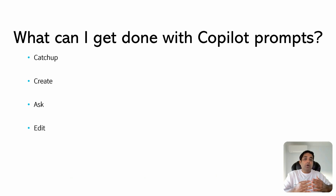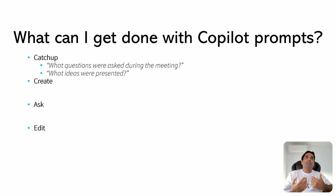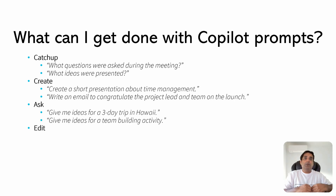With Copilot, you can create or edit content, post questions, summarize information, and stay updated on various matters. So the question is, what can I get done with Copilot prompts? Every prompt you write would most probably end up in one of these categories: catch-up, create, ask, and edit. For example, in catch-up, some questions could be 'What questions were asked during the meeting?' or 'What ideas were presented?' — especially when using Copilot in Teams. In create, it could look like 'Create a short presentation about time management' or 'Write an email to congratulate the project lead and team on the launch,' especially using Copilot with Microsoft Word or Outlook. In asking, you could say 'Give me ideas for a three-day trip to Hawaii' or 'Give me ideas for a team-building activity,' especially when using Copilot for Microsoft 365 apps on the web.